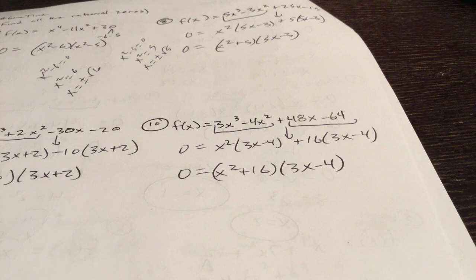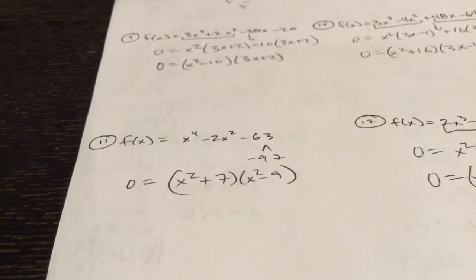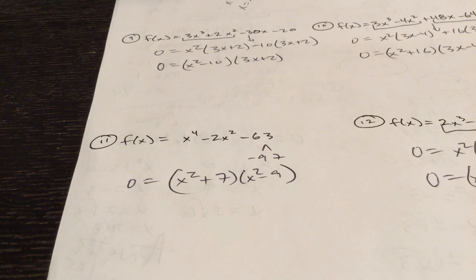Again, cover up method. Set 6x squared plus 16 equal to zero, 3x minus 4 equal to zero. On eleven, what multiplies to 63 and differs by two? Again, you're going to set those equal to zero.